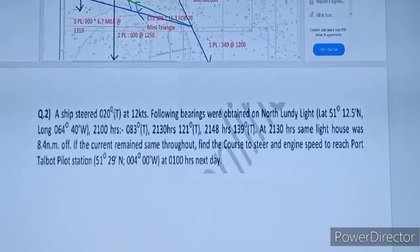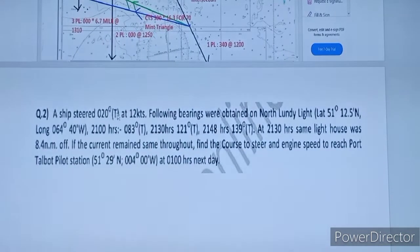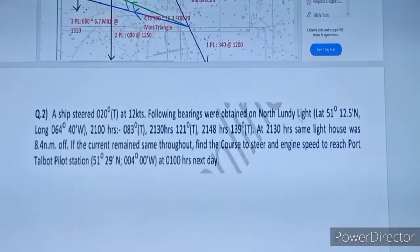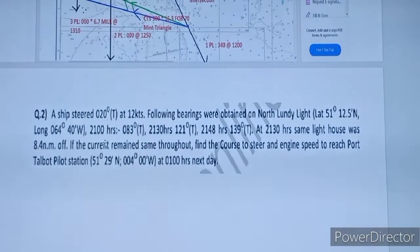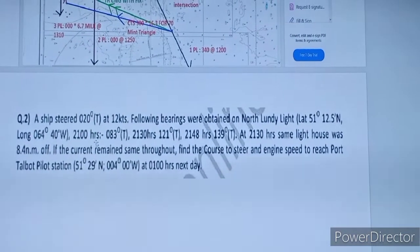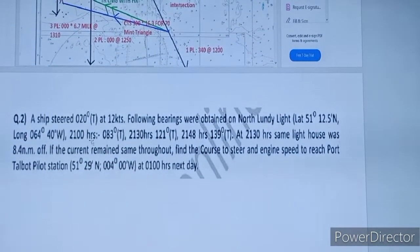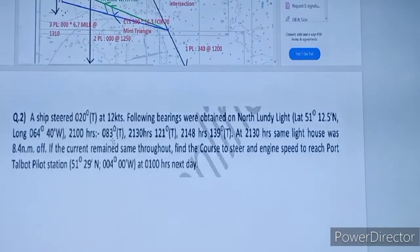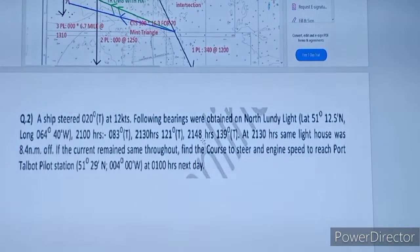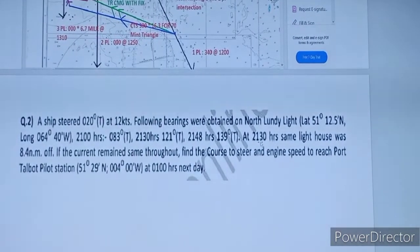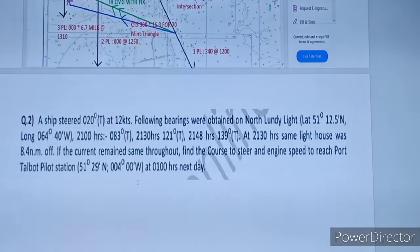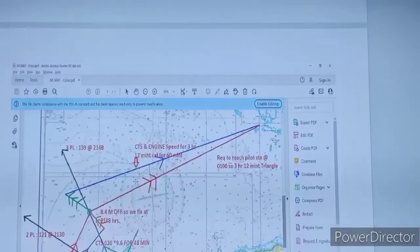So what is given in the question: CTS 020 and 12 knots engine speed. We have one lighthouse — from that one lighthouse we have three different times and three different position lines. At 2100 it is 083, at 2130 that is 30 minutes difference we have 121, and at 2148 we have 139. We also have one fix at 2130 — 8.4 nautical miles off. Let's see how we will approach this question on the charts.